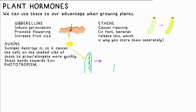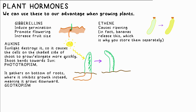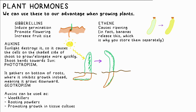Auxins control shoot and root growth. Auxin is destroyed by sunlight, so it gathers on the shaded side of a shoot, causing more growth and elongation of cells on that side — so the shoot bends toward the light source. This is called phototropism. In roots, however, auxins inhibit growth. The hormone gathers on the bottom of a root, so the top side grows more quickly, causing the root to grow downwards. This is called geotropism.